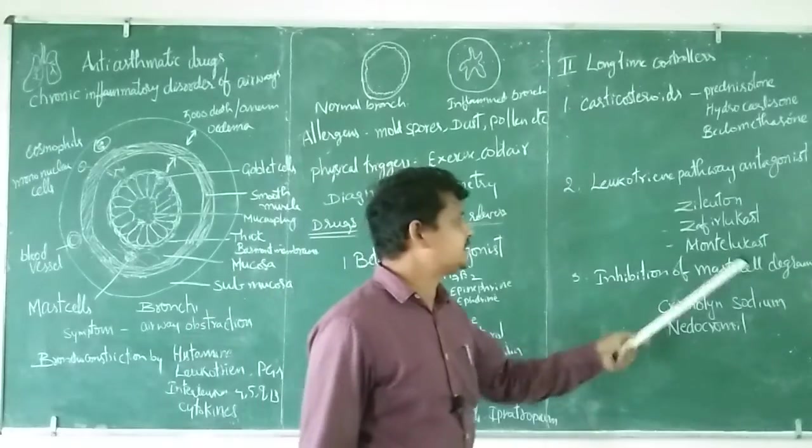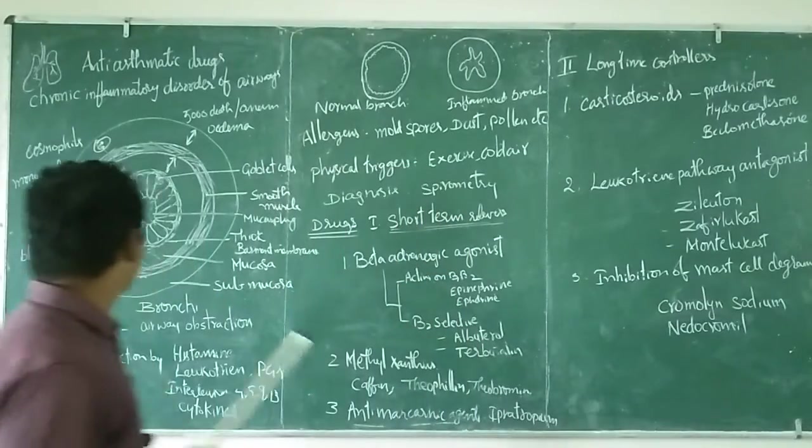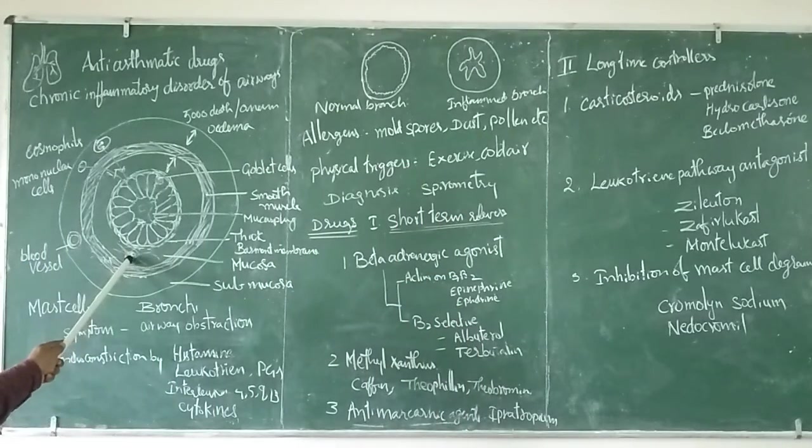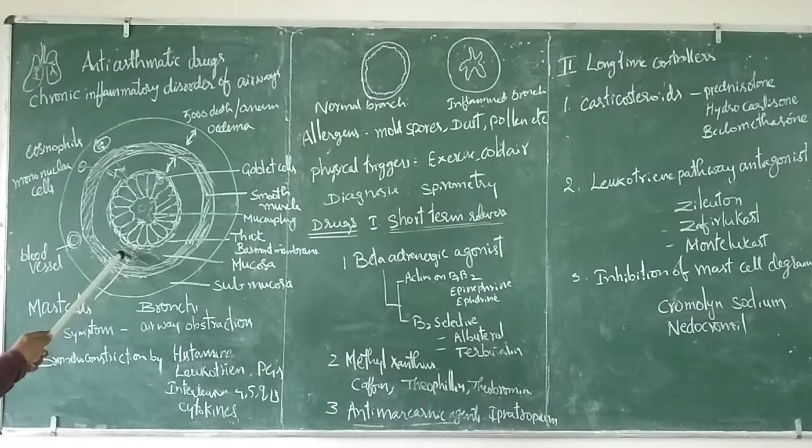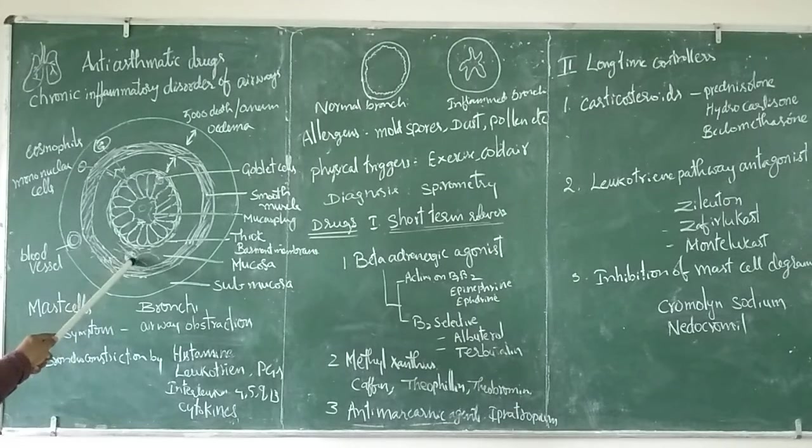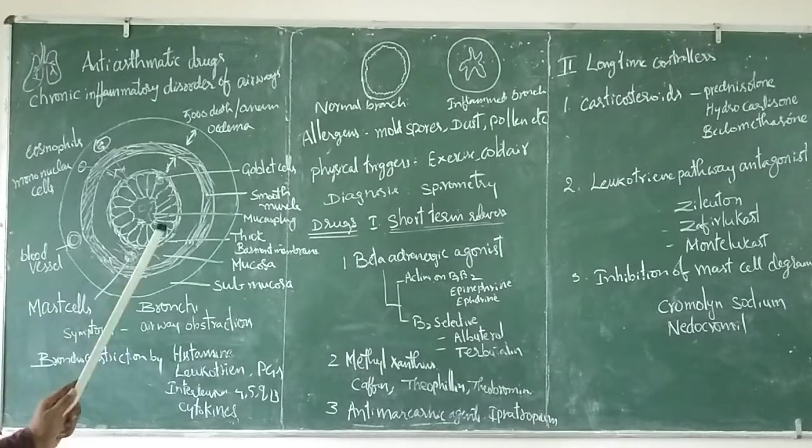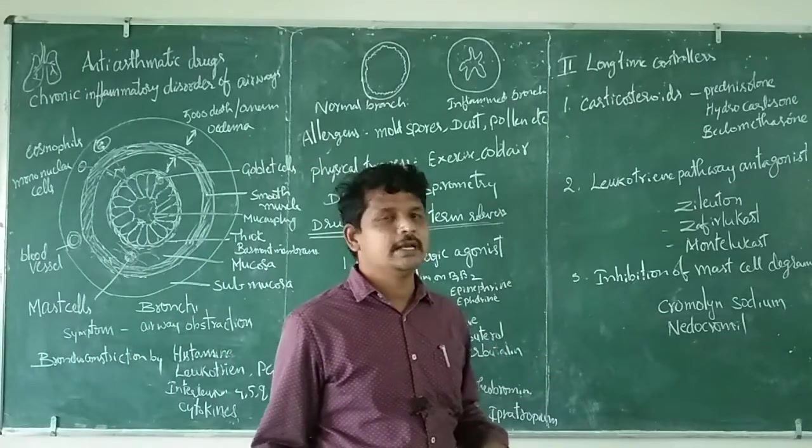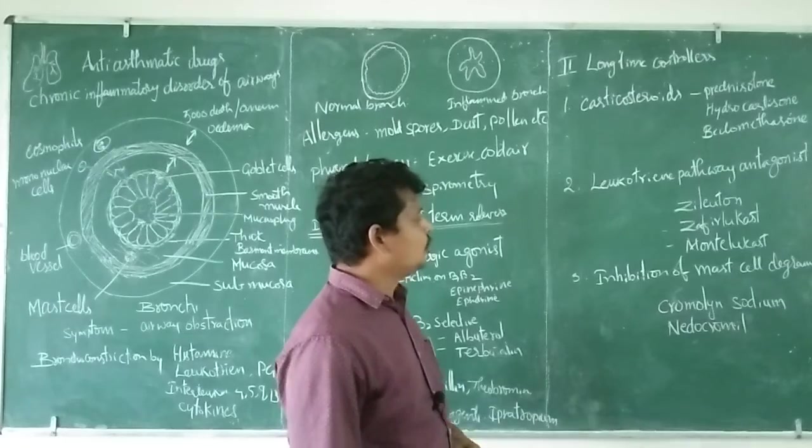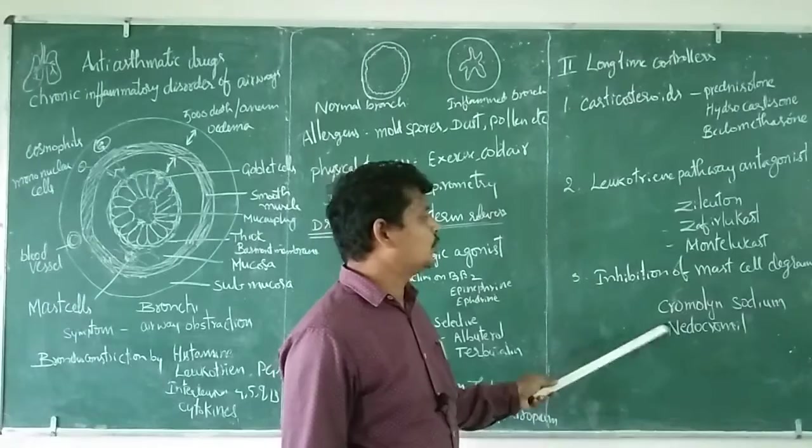Inhibition of mast cell degranulation: mast cells secrete histamine. We inhibit the degranulation of mast cells, resulting in histamine not being released. The contraction can be controlled. In this way we treat patients. Example: cromolyn sodium and nedocromil.